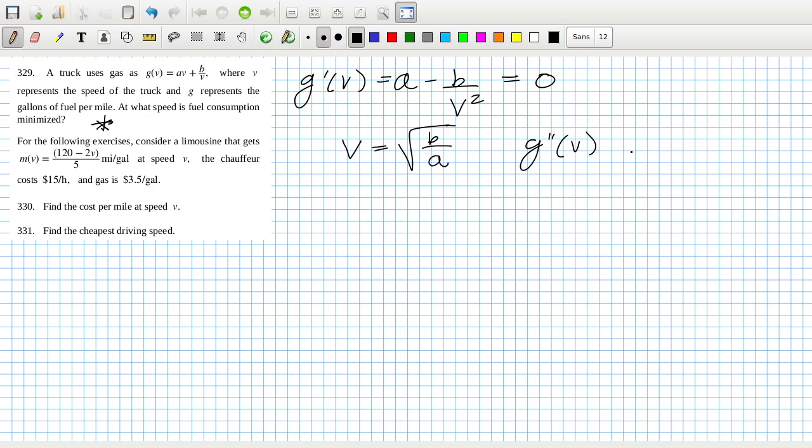Better mention that in a ticket. That would be 2b over v cubed, which is a positive, which therefore is a minimum.